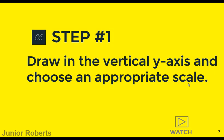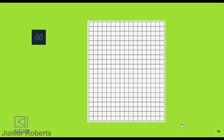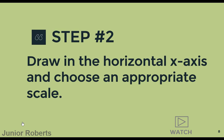Step one: draw the vertical y-axis and choose an appropriate scale. We'll start out by getting our graph paper and drawing the vertical y-axis on this side here, going all the way up vertically. We have now drawn our vertical y-axis.